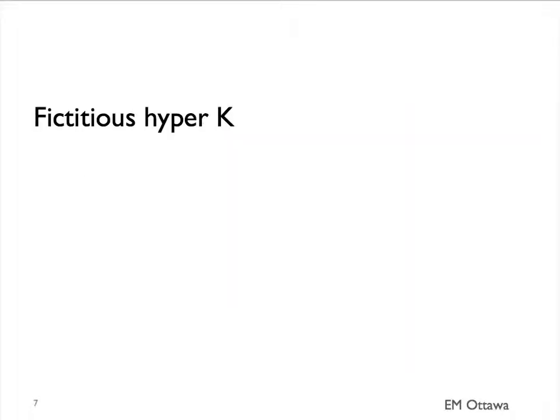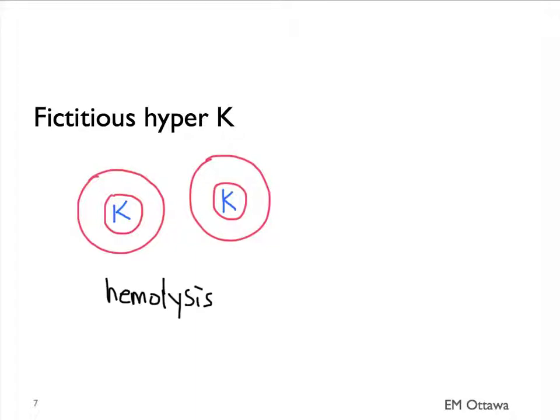There is one common reason for a fictitious hyperkalemia, that is a falsely elevated reading. Remember that potassium is mostly an intracellular ion. When the blood is being drawn, if there is a lot of hemolysis because it was a difficult poke or the tourniquet was put on for a long time, potassium will leak into the serum portion and therefore will get a falsely high reading. Therefore, we often want to know if the sample was hemolyzed when there is a high potassium reading.